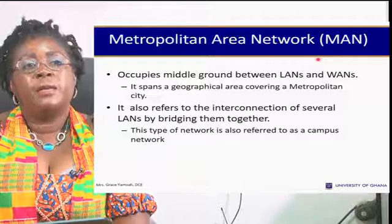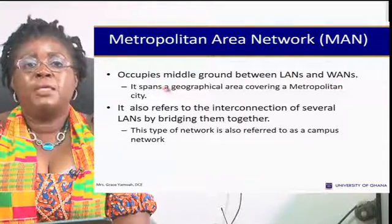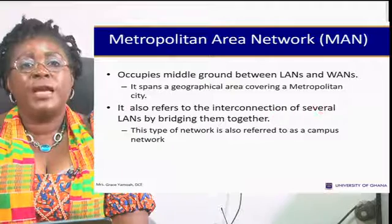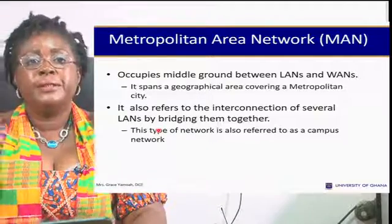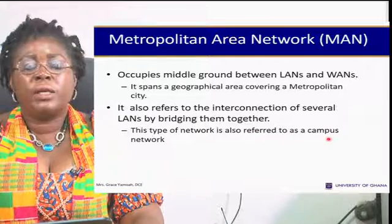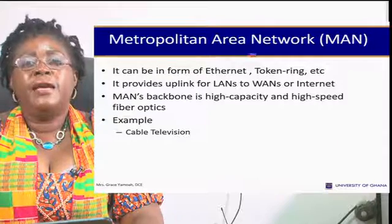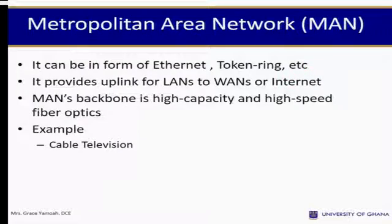Metropolitan Area Network (MAN) occupies middle ground between LANs and WANs. It spans a geographical area covering mostly a metropolitan city. It also refers to the interconnection of several LANs by bridging them together — you can have two or three LANs put together to form a MAN. This type of network is also referred to as a campus network; a typical example is the University of Ghana campus. MAN can be in the form of internet or token ring, and provides a link for LANs to WANs or the internet. MAN's backbone is high-capacity, high-speed fiber optic; an example is cable television.